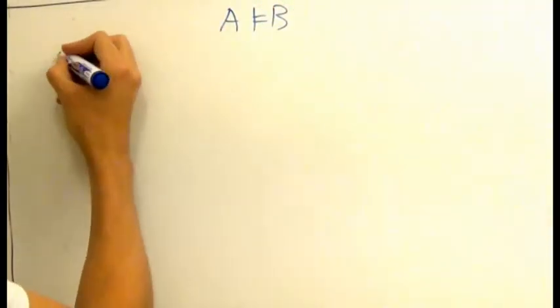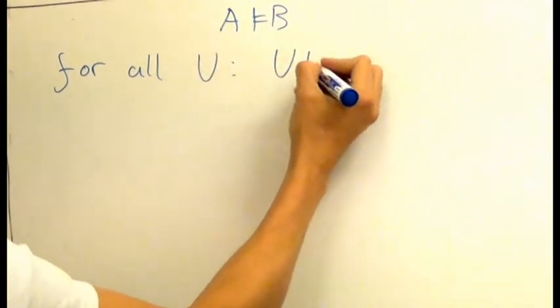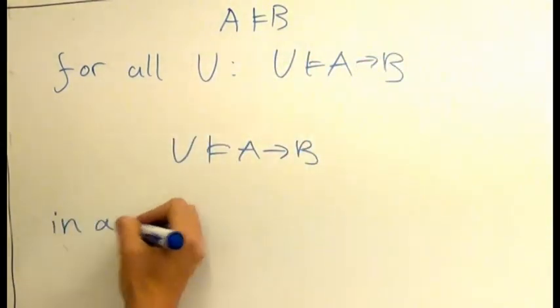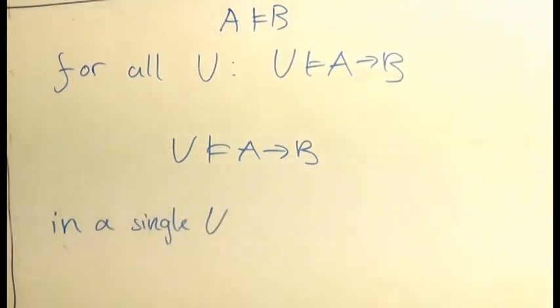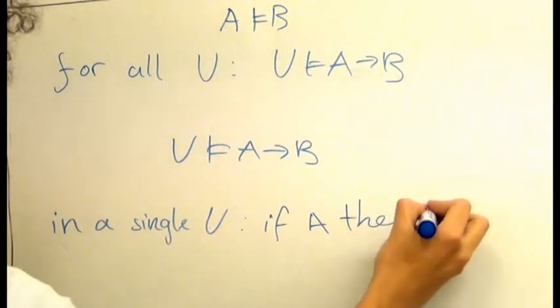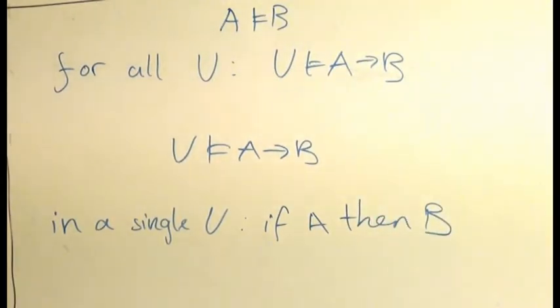Conclusively, to rightfully exclaim that A makes true B, it has to be the case that in all worlds, A materially implies B. But for the statement V makes true A materially implies B to hold, it has to be the case that in a single world, the one called V, that if A is true, then B is true.